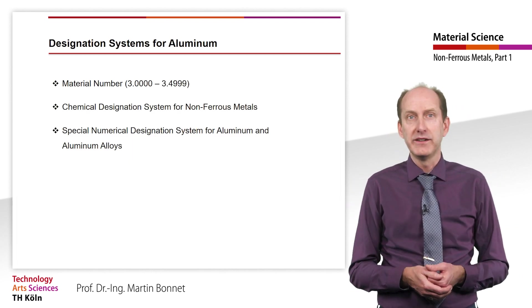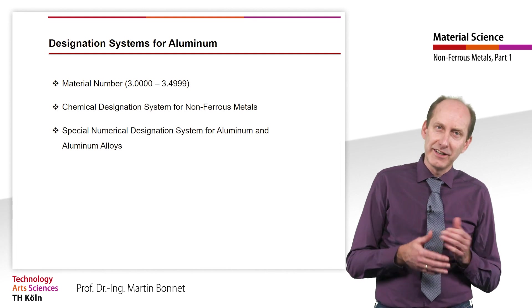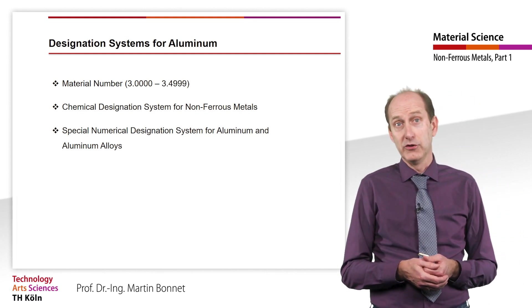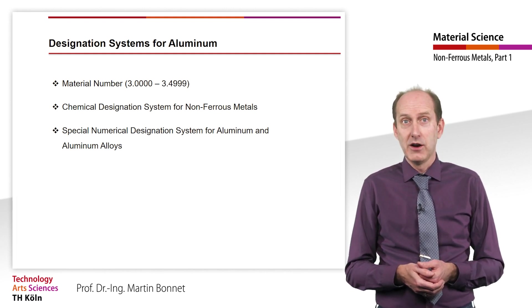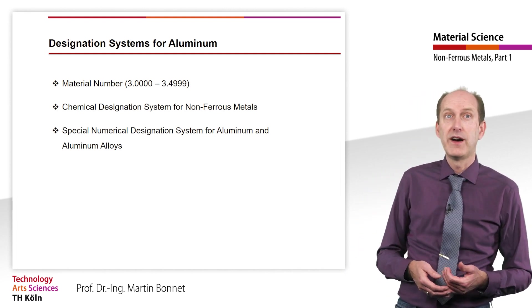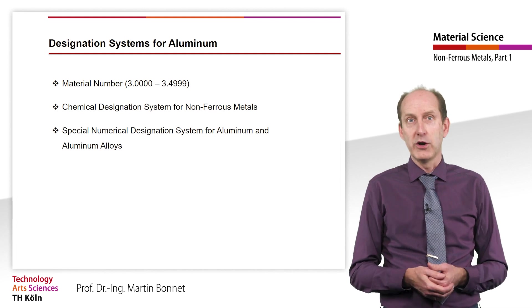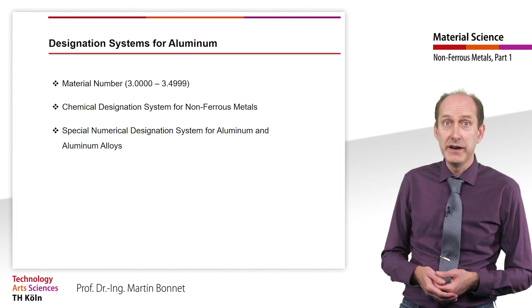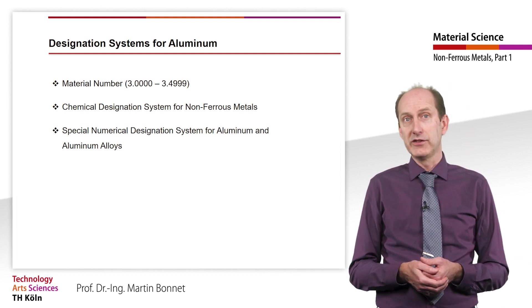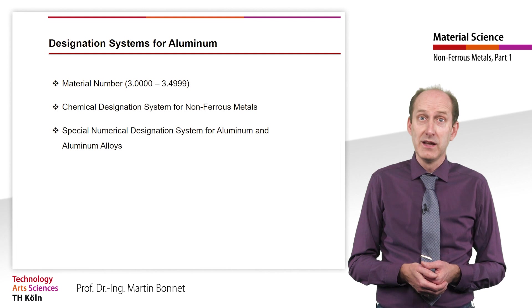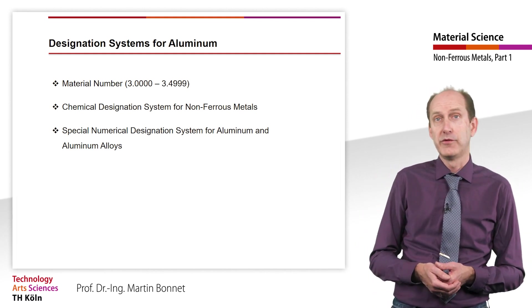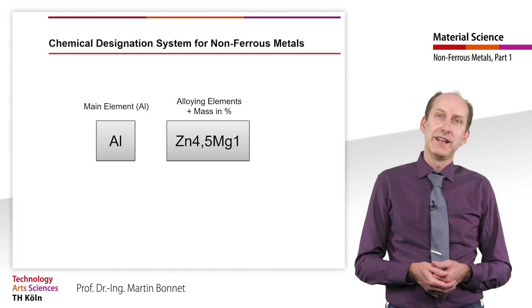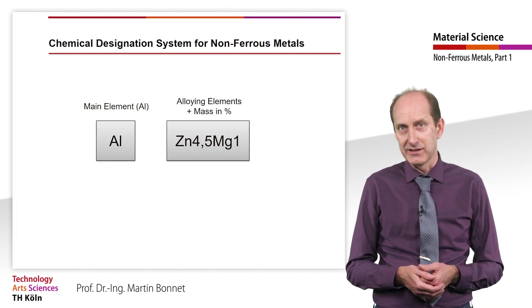The European standard still maintains two, strictly speaking, three different designation systems for aluminum, numerical and chemical designation. On the one hand, there is the five-digit material number, which we already got to know in the chapter designation of steel. In addition, there is the chemical designation system for non-ferrous metals and a special numerical designation system for aluminum and aluminum alloys. However, let's first take a look at the chemical designation system, which is applicable for all non-ferrous metals.